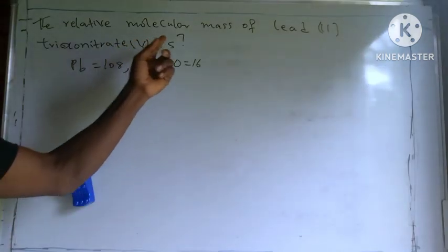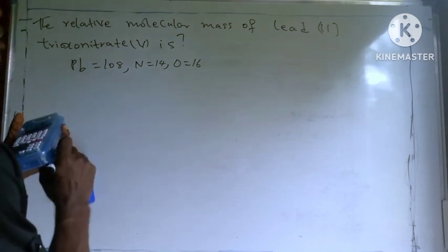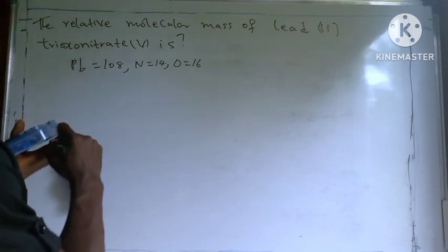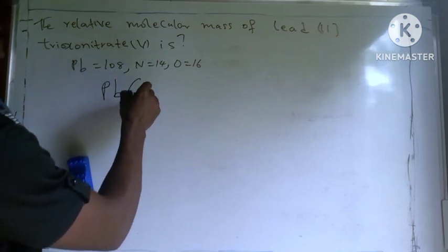We are asked to calculate the relative molecular mass. So first of all, write down the formula, the chemical formula of lead 2 nitrate 5. So this is the formula: lead bracket open.